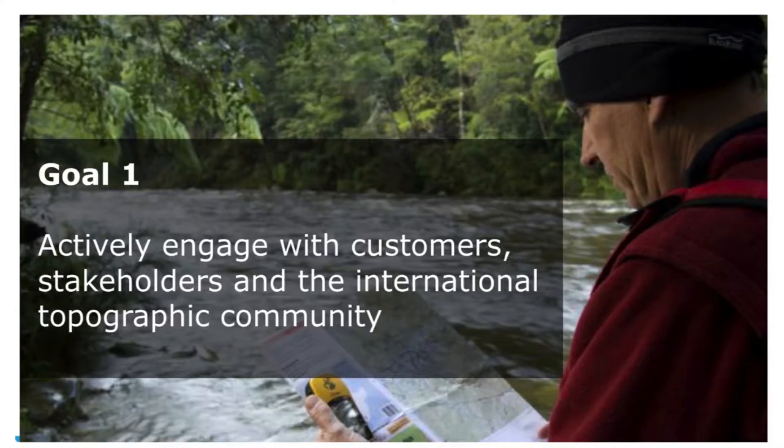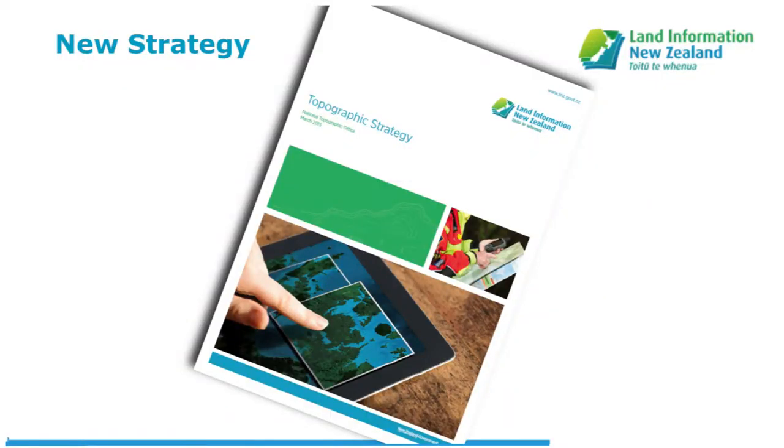We have five strategic goals inside the strategy. Our first is to actively engage with customers, our stakeholders and the international topographic community. So this means we really want to understand what people are doing, both with our products and with our data. We need to know what the key stakeholders, such as the Defence Force, emergency services, are doing with our maps and our data and how we can support them better. And of course, we need to stay in touch with the international community so that we are keeping up with the trends. We know what's going on in the techniques and tools that are in play so that we can leverage that for New Zealand as well.